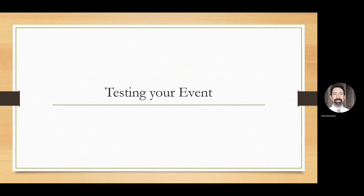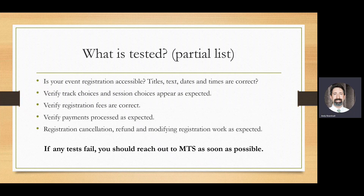Lastly, we'll talk about testing your event. Things included in testing are confirming your event registration is accessible, making sure all text, titles, dates and times are correct, verifying session choices and costs appear as expected, verifying registration fees are correct on all items that incur a cost, and verifying that payments are processed as expected. You'll walk through the entire registration process including paying with a credit card. After that, you also test issuing a refund, canceling a registration, and modifying the registration to make sure they all work as expected. If any tests fail, you should reach out to MTS as soon as possible.